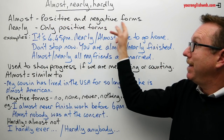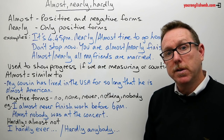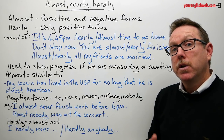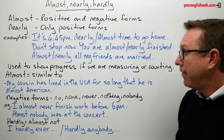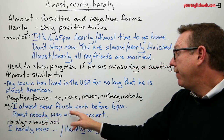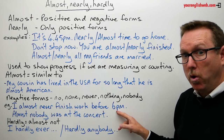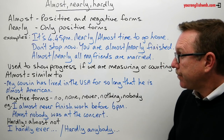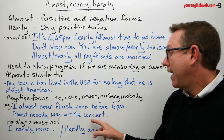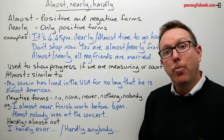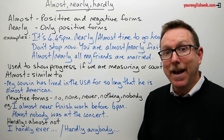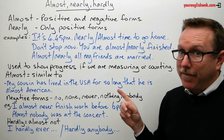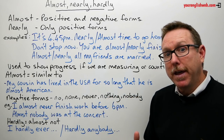When it comes to negative forms, remember that 'almost' can be used in positive and negative forms, but 'nearly' can't. We have to use 'almost' in negative forms. For example: 'I almost never finish my work before 6 p.m.' — sometimes I do, but almost never. And: 'Almost nobody was at the concert' — there were very few people, perhaps because the band wasn't very popular.